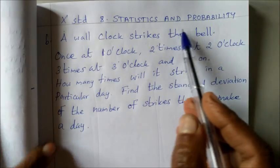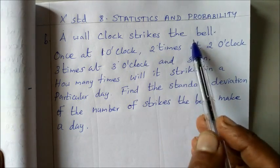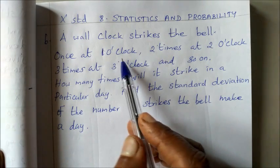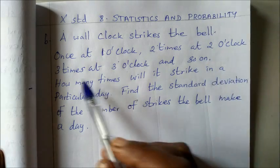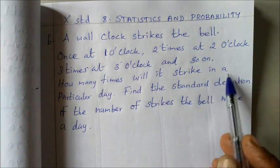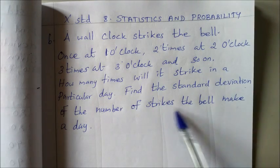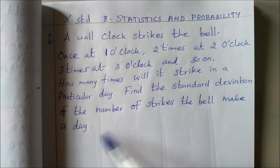So, this is 10th standard, 8th unit, statistics and probability, 6th sum. A wall clock strikes the bell once at 1 o'clock, 2 times at 2 o'clock, 3 times at 3 o'clock and so on. How many times will it strike in a particular day? Find the standard deviation of number of strikes the bell makes in a day.